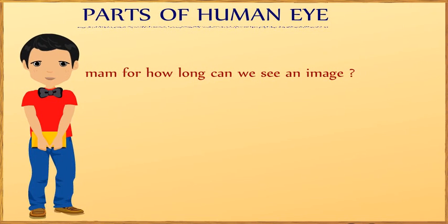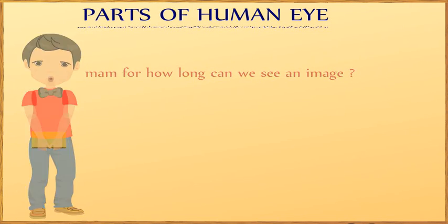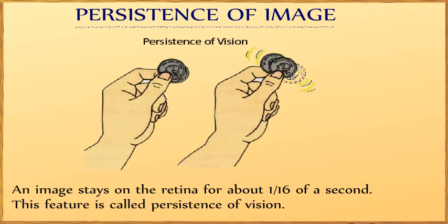For how long can we see an image? An image stays on the retina for about 1/16th of a second. This feature is called persistence of vision. Due to this, when many still images are shown in a sequence, they give an illusion of moving images. Movies and animation are made by exploiting this property of the human eye.